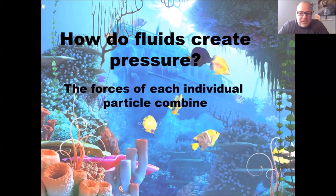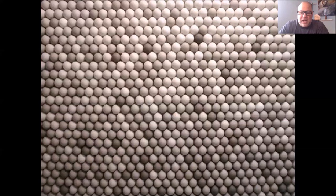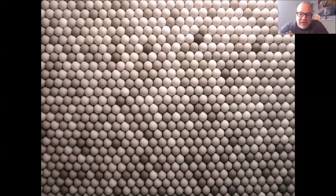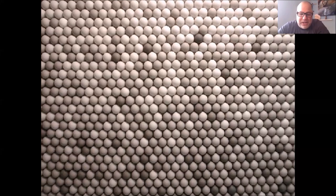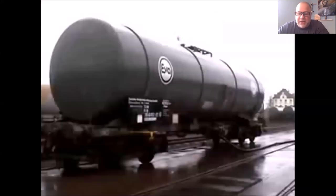How do fluids create pressure? It's the force of all those individual particles on top of you. Think of the ping pong ball example — if someone puts one ping pong ball on your head, no big deal. But if they put a million ping pong balls on top of you, it would kill you. Even though one ping pong ball is so light you almost can't feel it, a million of them with all their weight crushing down on you is probably fatal. They really add up.